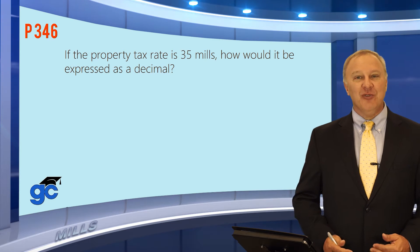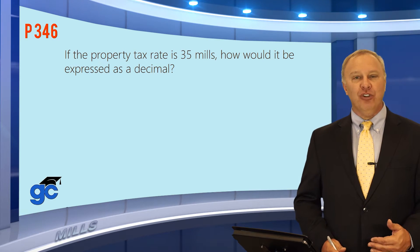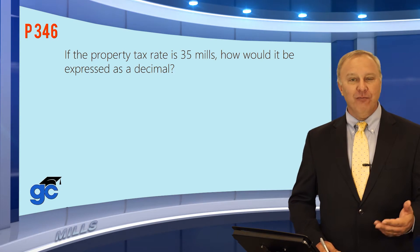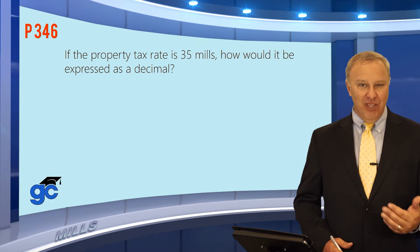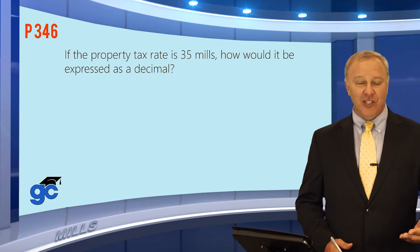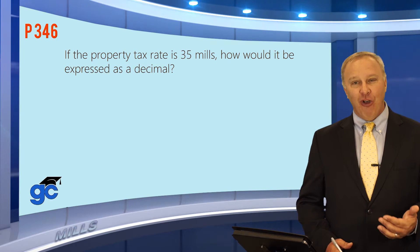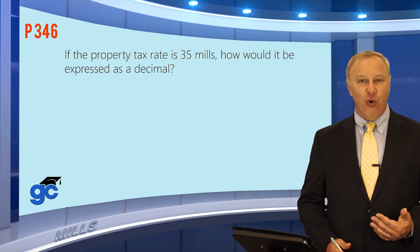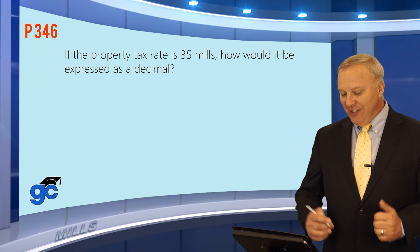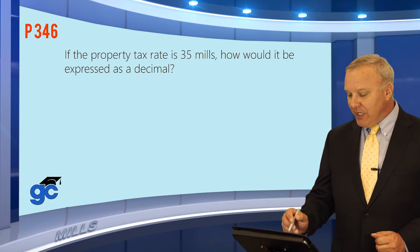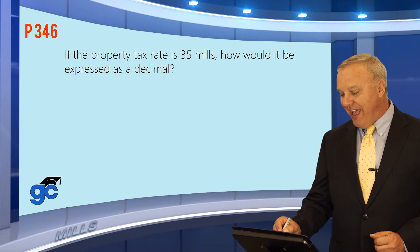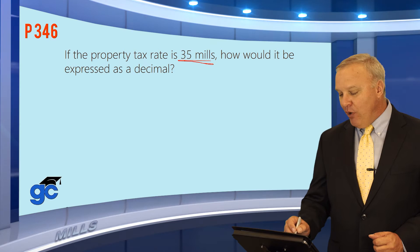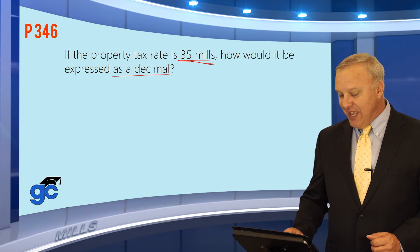This is just a short video to explain how to convert mills into a decimal. Remember that you've got mills for intangible tax and you'll also have mills for property taxes. Let's take a look at this question — it says the property tax rate is 35 mills and asks how it would be expressed as a decimal.